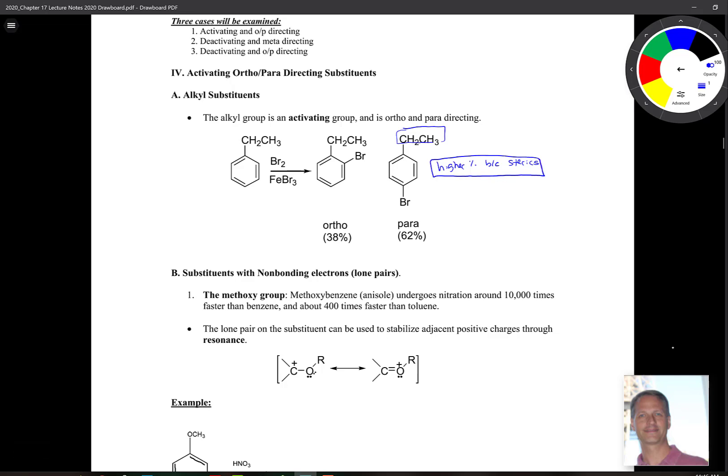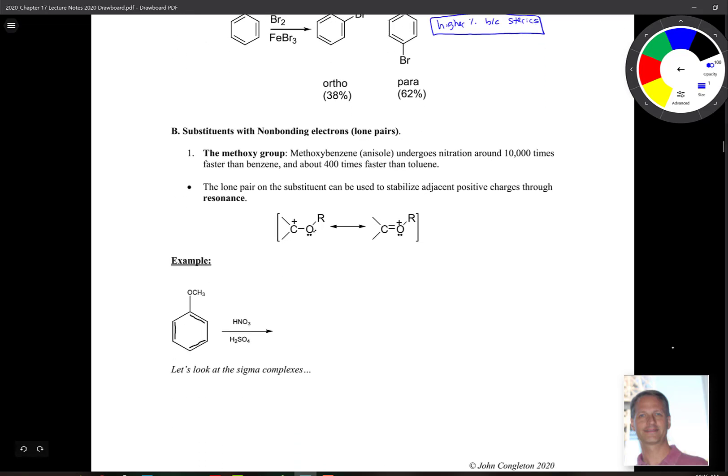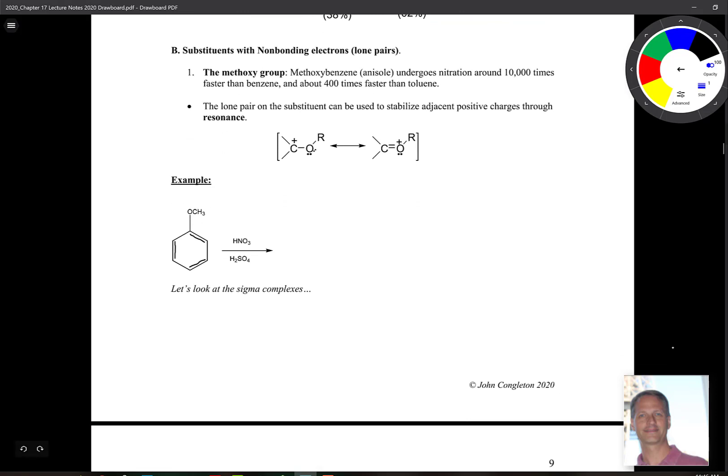Well, what about substituents with non-bonding electrons? That just means lone pairs. So I just gave you an example of that a couple of minutes ago. Remember we saw carbon with a plus charge on it, adjacent to a lone pair bearing atom. And then we said that can occur giving you an additional resonance structure if this situation were to arise.